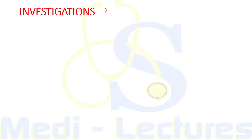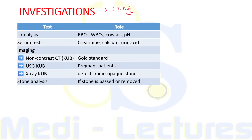The investigation of choice for confirming renal calculi is CT-KUB. A non-contrast CT can be done. Urine analysis will also help: it can show RBCs due to microscopic hematuria, WBCs if the stone is secondary to infection, and crystals in urine examination can comment on possible stone formation. Urine pH also helps. Serum tests that should be done include serum creatinine, calcium, and uric acid.